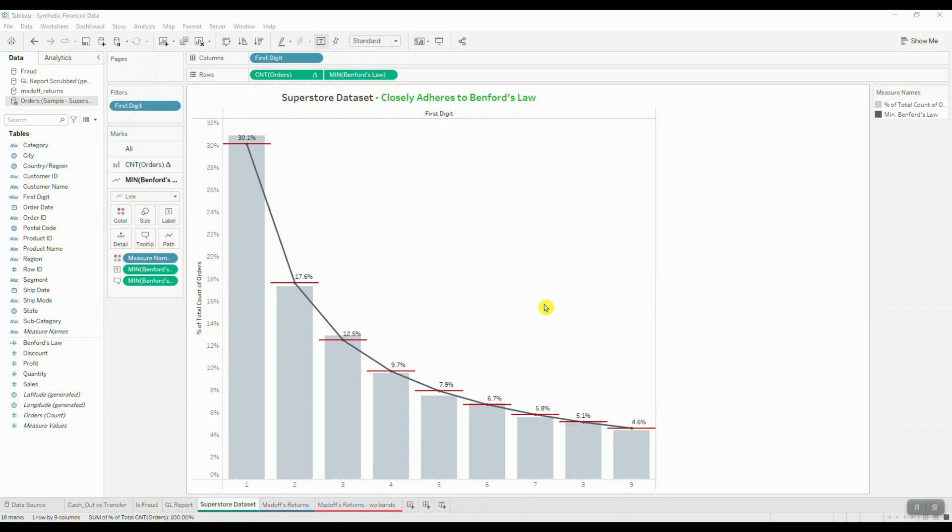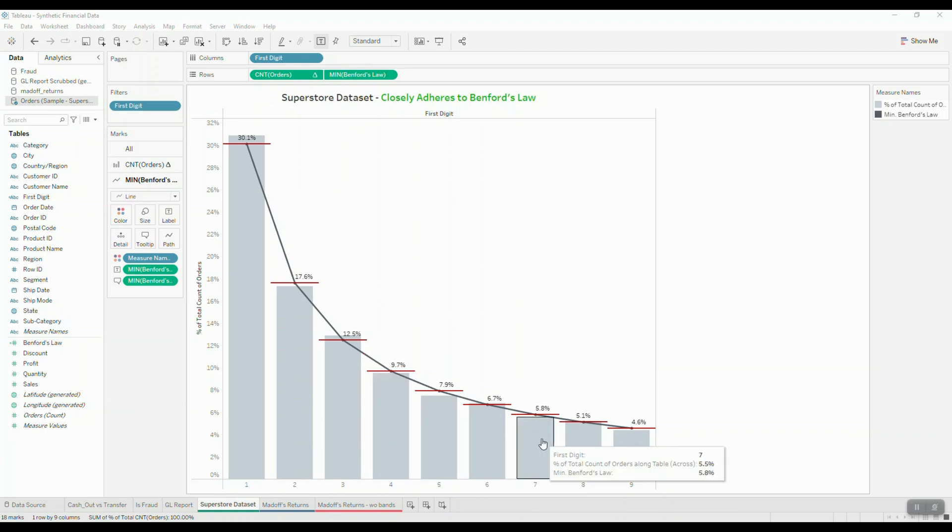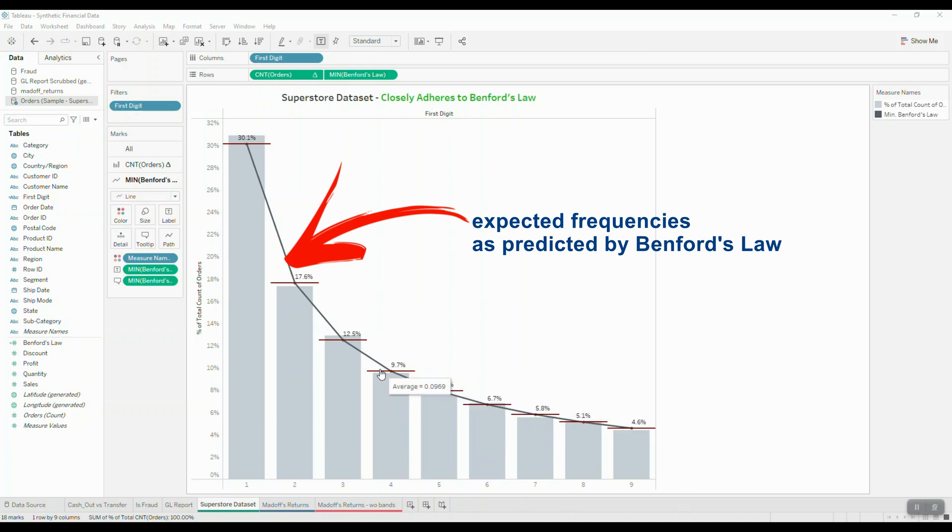Here I'm working with Sample Superstore dataset and I'm performing my analysis using the first digit test on the frequency of sales transactions. The bars represent the frequency of the first integer in my transactional data set, and the line represents expected first digit frequencies based on Benford's law.